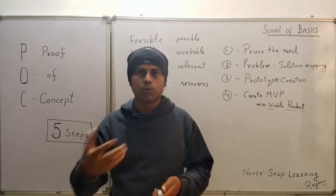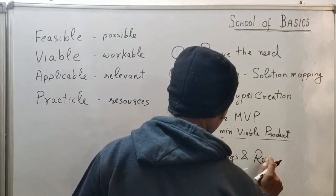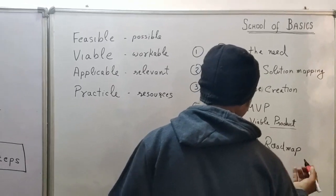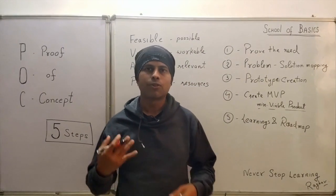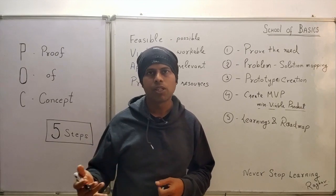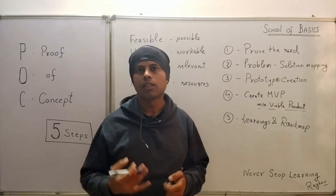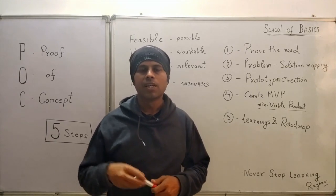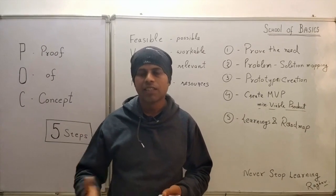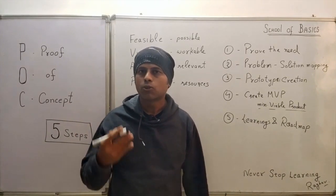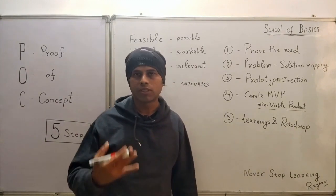Step number five is learnings and roadmap. The last step is to document all the learnings from the earlier steps — what you need to change, what you need to improve, whether you should consider other solutions, and what the improvements should be. You should also document the roadmap, possibly in phases: what you will design and release first, and what the full project roadmap looks like. This brings a lot of clarity to the entire effort.